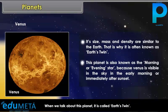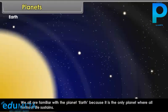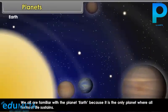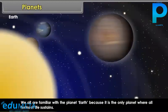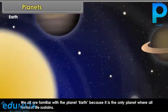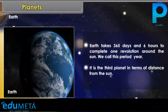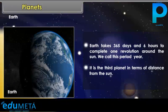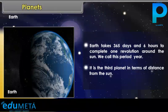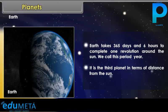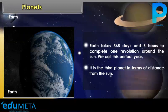Earth is the only planet where all forms of life sustain. Earth takes 365 days and 6 hours to complete one revolution around the Sun. We call this period a year. It is the third planet in terms of distance from the Sun.